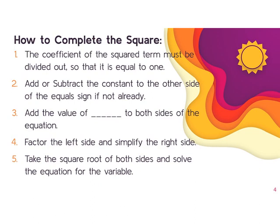And then we're going to add the value of half of your b value, and then we square it. So that's what you're going to add to both sides of your equation. And then you're going to factor the left side and simplify the right side, making sure that when you factor that left side, we're going to leave it in the vertex form.